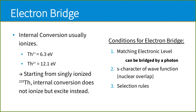Usually, internal conversion ionizes the atom because the energies are just too large. But in thorium-229, the first ionization energy is 6.3 eV and the second ionization energy is 12.1 eV. Meaning that starting from singly ionized thorium-229, internal conversion does not ionize the atom — but it excites an electron instead. This is what many people call bound internal conversion.